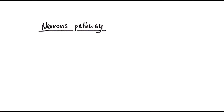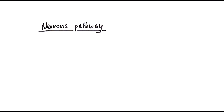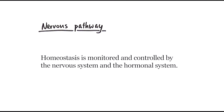In this video we'll be looking at the different types of neurons in our nervous system and their structures. Before we do that, let's think about the nervous pathway. Homeostasis is the maintenance of our internal environment, kept relatively stable through negative feedback, and it's monitored by two specific systems: the nervous system, which we'll focus on today, and the hormonal system covered in chapter 14.